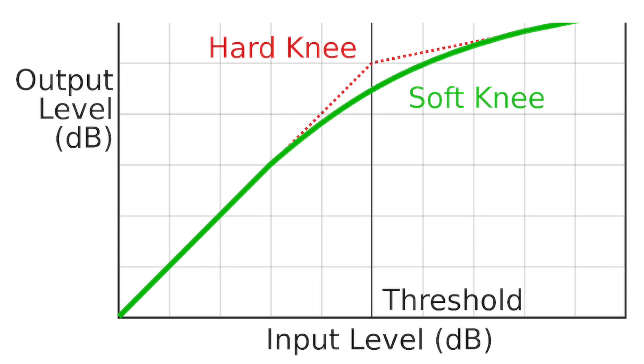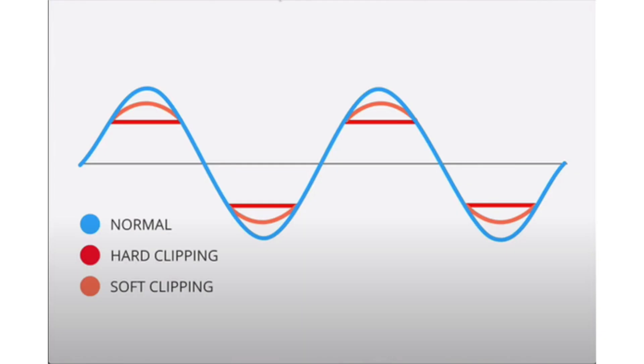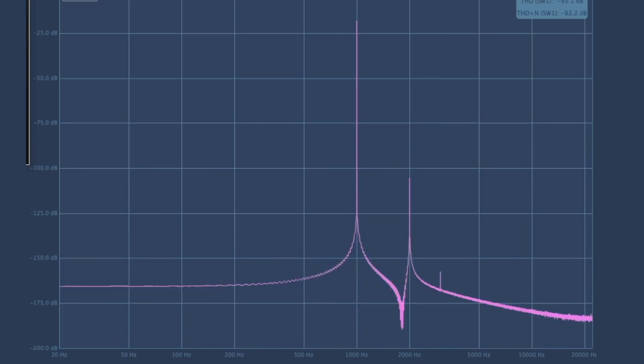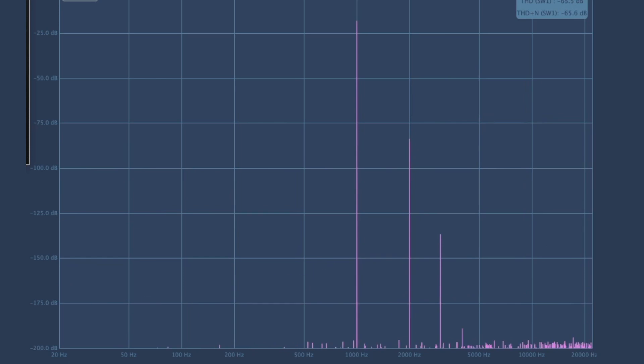Its output then becomes non-linear to the input, i.e. lower, resulting in a subtle soft-knee style compression, often referred to as soft clipping. This alters the shape of the sound wave, causing small spikes in amplitude at multiples of fundamental frequencies. These are known as harmonic distortions.